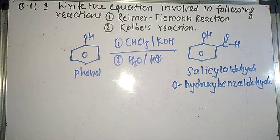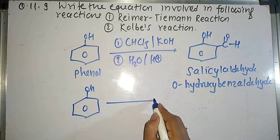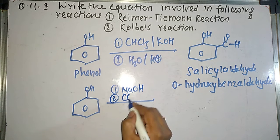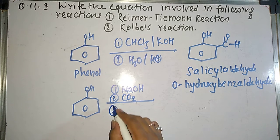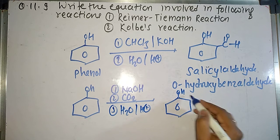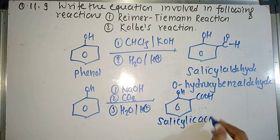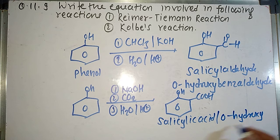So next reaction is the Kolbe's reaction. In Kolbe's reaction our starting compound is same, that is phenol. So what happens exactly when phenol reacts with NaOH first. First reagent is NaOH, that is base. It produces phenoxide ion. Then it reacts with carbon dioxide. Then it gives carboxylic group at the ortho position of phenoxide. At the third step, reaction with water in acidic medium gives us salicylic acid. This molecule is nothing but salicylic acid. It is also called as ortho-hydroxybenzoic acid.